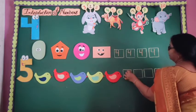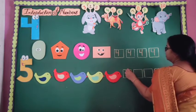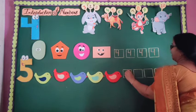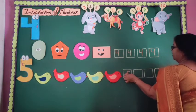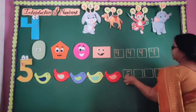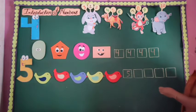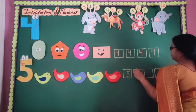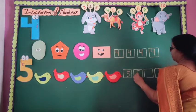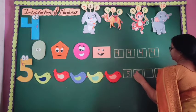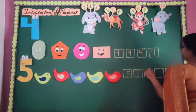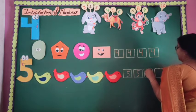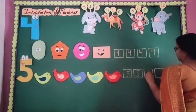First of all, we draw a small sleeping line like this. After that, we draw a small standing line like this. After that, we draw a curved line like this. Let's make number 5. Small sleeping line, small standing line, after that draw a curved line. Okay?